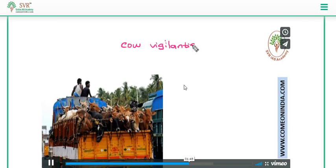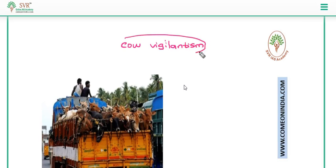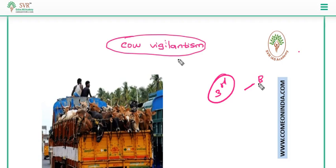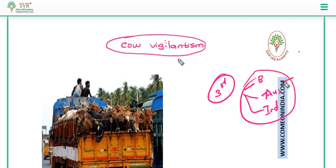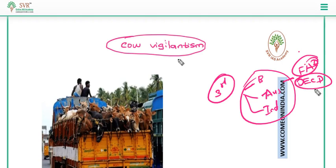In the context of cow vigilantism, according to the report India has become the third largest beef exporter. First rank goes to Brazil, second rank goes to Australia, and third rank goes to India based on the amount of beef exported. FAO stands for Food and Agriculture Organization and OECD stands for Organization of Economic Cooperation and Development.